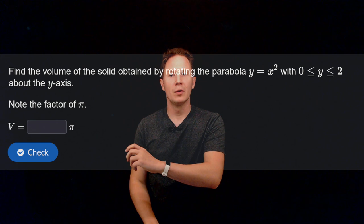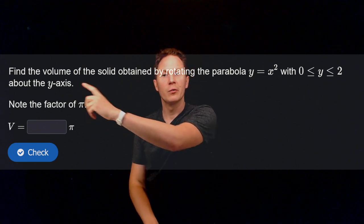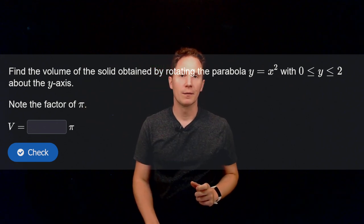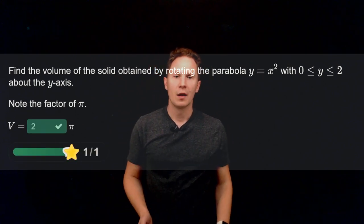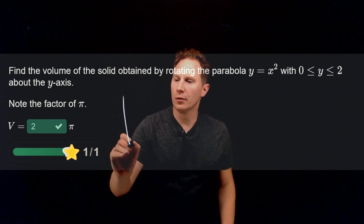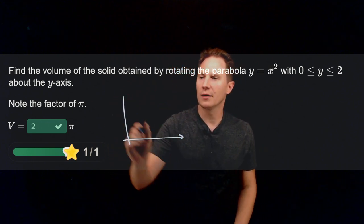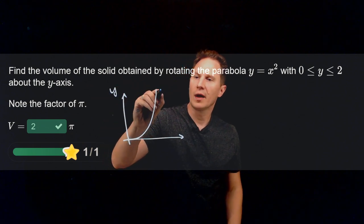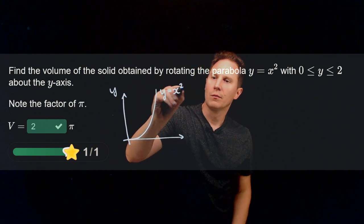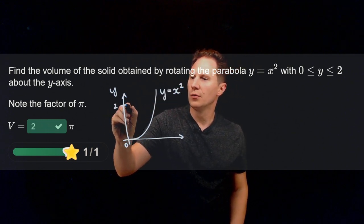Note the factor of pi, so you only need to include the multiple, and also be careful because we are rotating about the y-axis here. Okay, I hope you paused the video and found the volume to be 2. Well, we just need to be careful again because we are rotating about the y-axis, this arc of the parabola y equals x squared, where y changes from 0 to 2.